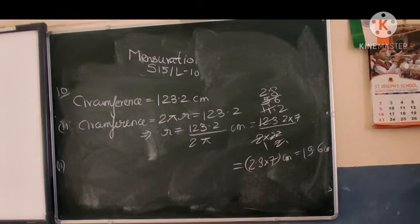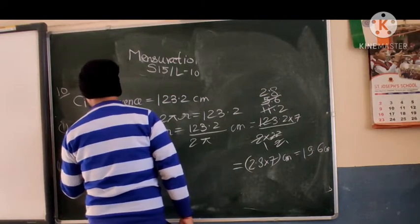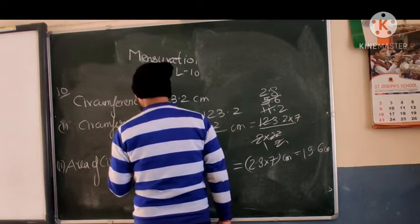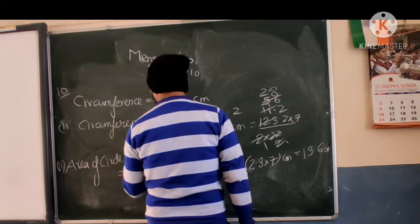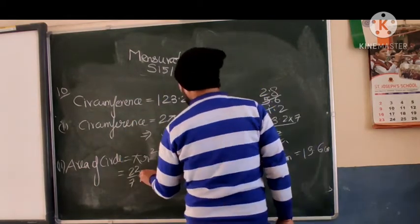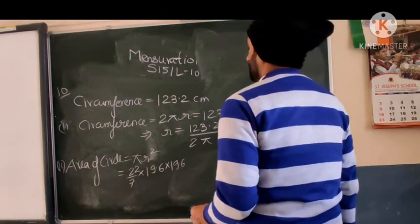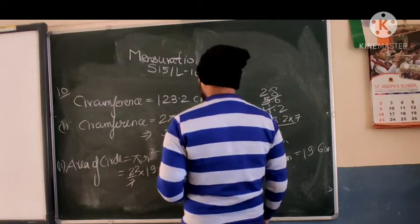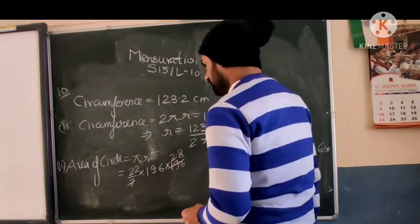Area in centimeter square. Area of circle. So here we have πr². That means 22/7 into 90.6 squared. It will be 90.6. So 22/7 into 90.6.